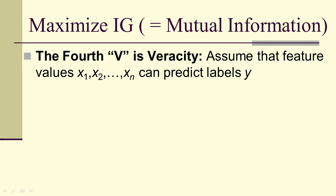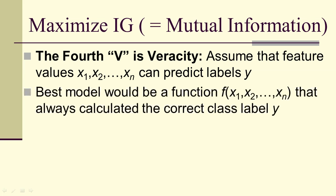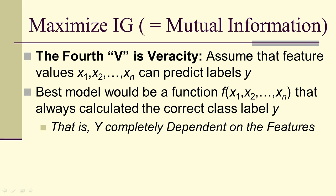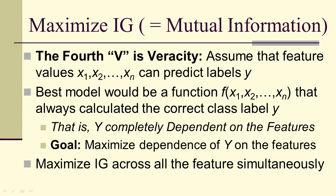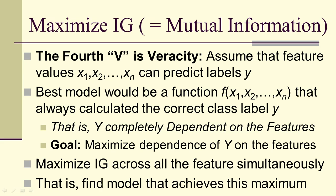Now, in order to do this, we're going to maximize information gain like we did earlier. To begin with, the fourth V for big data is veracity. We assume that we can use the feature values to actually predict the labels. In other words, we assume that the data isn't junk, that it can actually do what we ask it to do. Given that, the best model would be a function of the features that always, you just crank it out, you know, go through the definition of the function, and out pops the correct label for the class. That doesn't really happen, and if we did have that case, that would mean that Y would be completely dependent on the features. So we don't really ever expect to see that, but we can maximize the dependence of Y on the features. That means maximizing the information gain across all the features and finding the model that achieves that maximum.